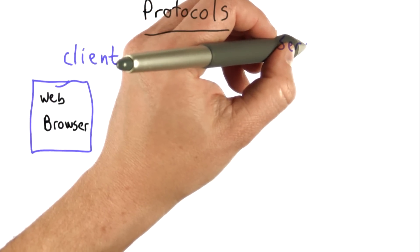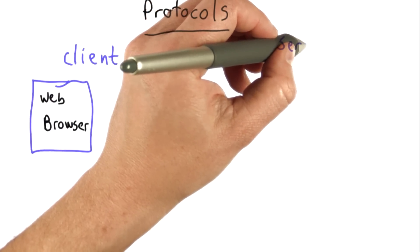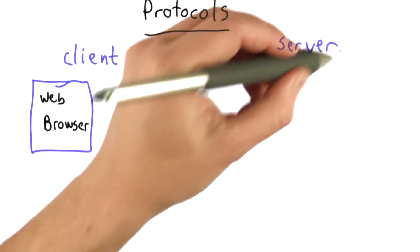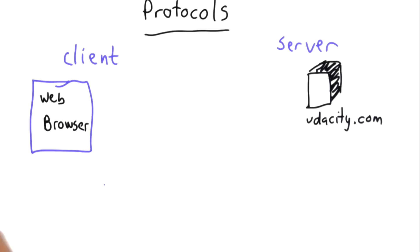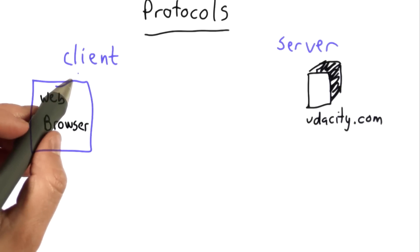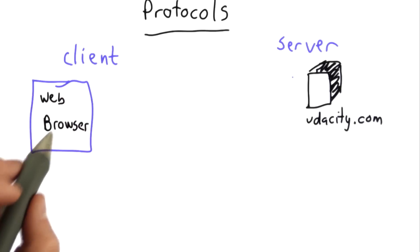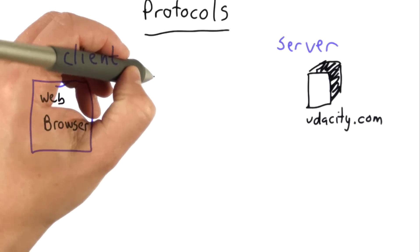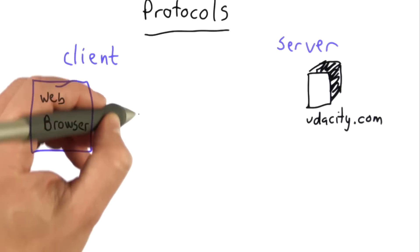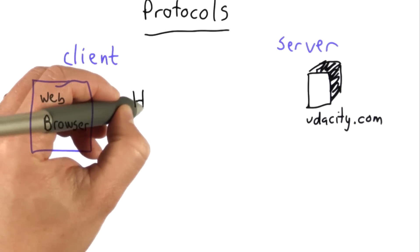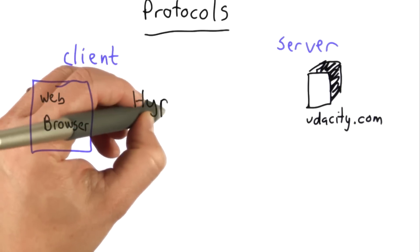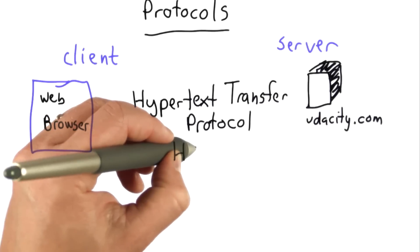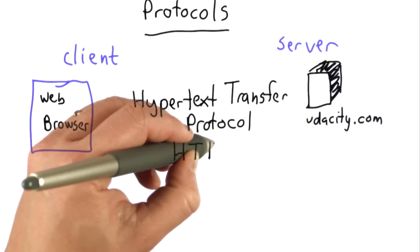So that might be udacity.com. The web browser is what you're running at home. And what the protocol says is, if you want to get the server to do something, the client has to send a message in a particular way. The protocol that we use on the web is called Hypertext Transfer Protocol, which is abbreviated as HTTP.